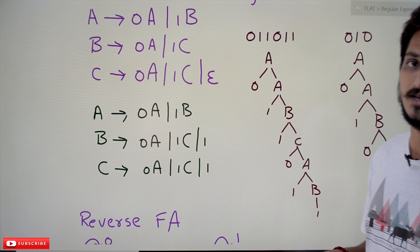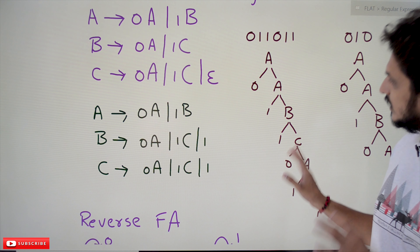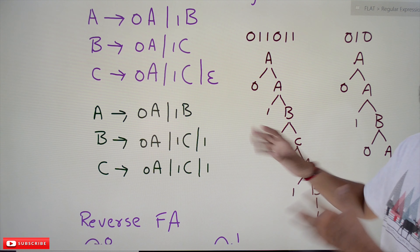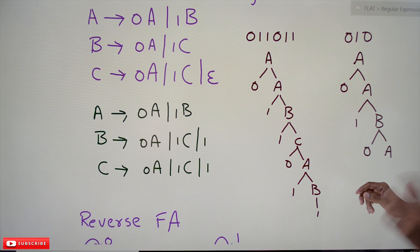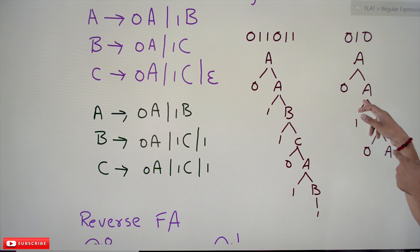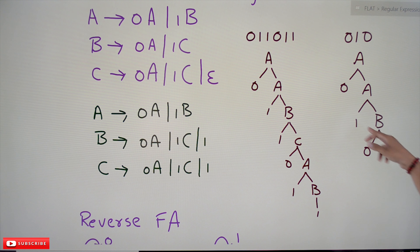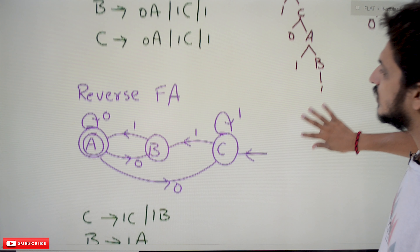Yes, zero one one zero one one is accepted. The intuition for deriving this was provided in our previous classes so we are not explaining it again here. The same way, zero one zero is not accepted — we are not able to generate it using these productions. We end up with A remaining with nothing to do, so zero one zero is not accepted.